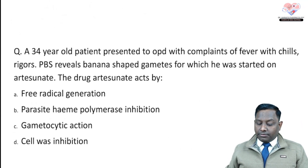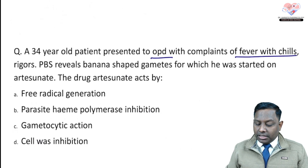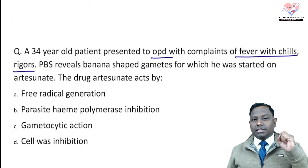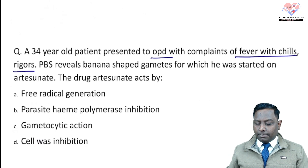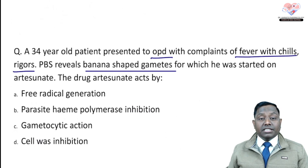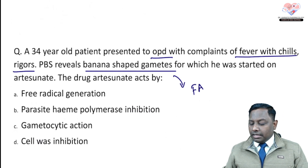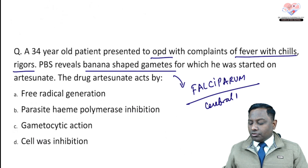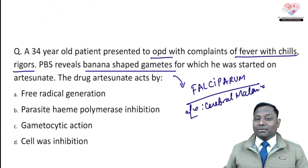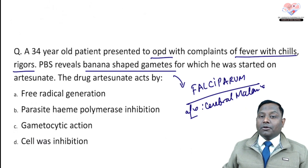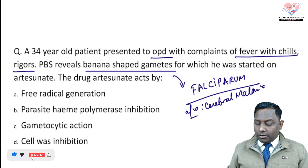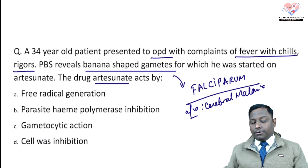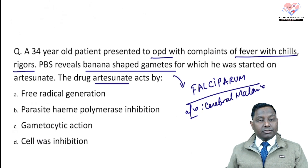Question 5: A 34-year-old male presents with fever with chills and rigors. In malaria questions, on peripheral smear, banana-shaped gametocytes are revealed — that's Plasmodium falciparum. P. falciparum causes cerebral malaria. The patient was started on Artesunate, which is indeed the drug of choice for cerebral malaria. They're now asking the mechanism of action of Artesunate.